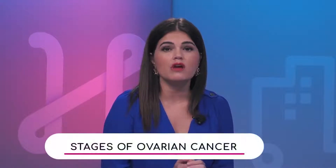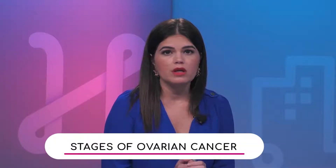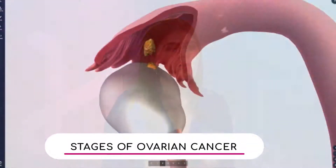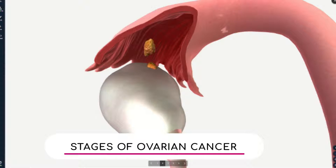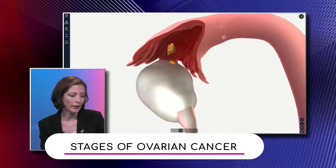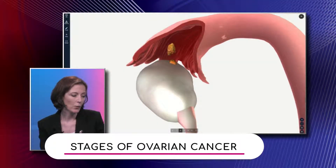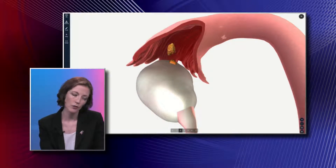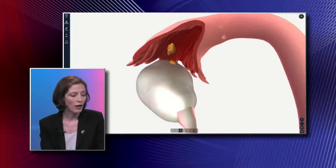We actually have a biodigital model showing different stages of ovarian cancer. This is the ovary — that little white Q-tip looking thing. The little yellow portion is actually a tumor; this would be a stage one tumor. It's confined to the ovary, whether one or two ovaries it would still remain a stage one.